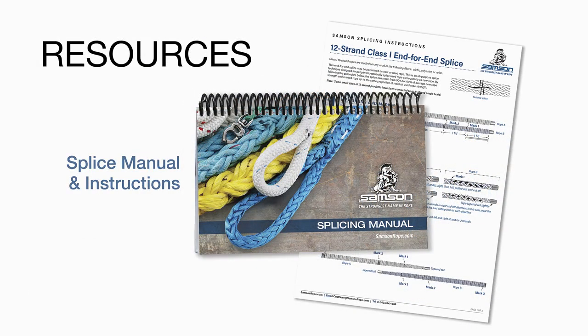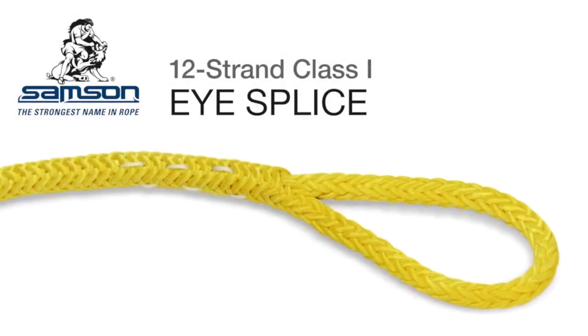The eye splice is used to form a permanent eye or loop in the end of the rope for attachment to a fixed point like a cleat or mooring bollard. An eye is also used to form the rope around a thimble to protect the rope when attaching to a shackle, chain, or wire rope. This splice may be performed on either new or used rope. By following the procedure shown, 90 to 100% of new rope strength is retained. In used rope, 90 to 100% of the residual strength is also retained.